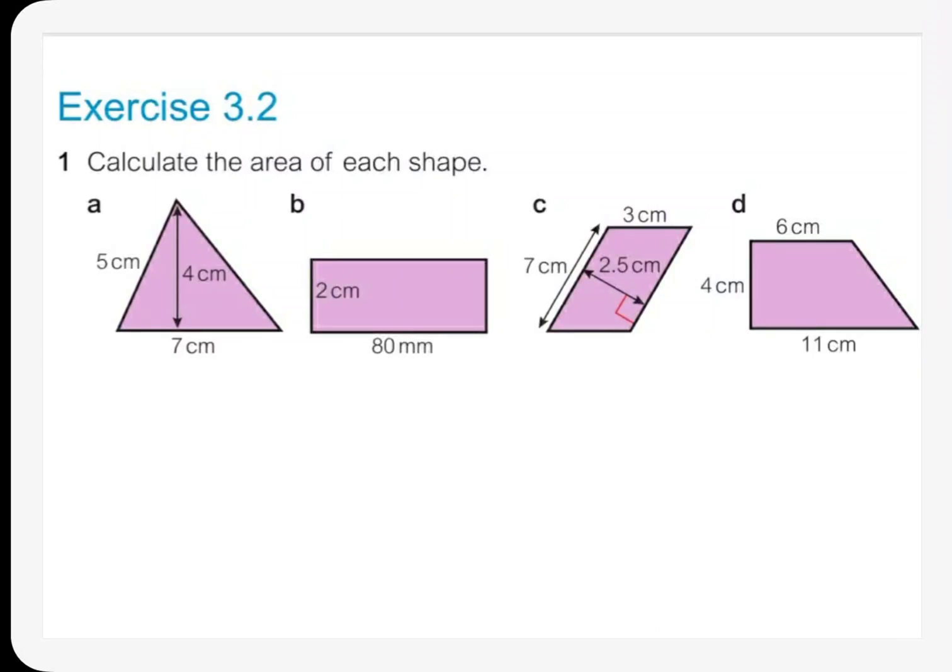Hello boys and girls, welcome to this presentation. In this presentation we're going to talk about unit 3.2, surface area of prisms. In the past video we answered questions A and B, and we understood how to get the area of a triangle and the area of a rectangle.